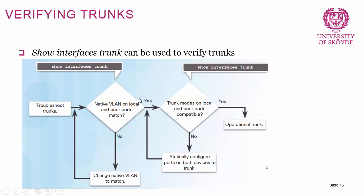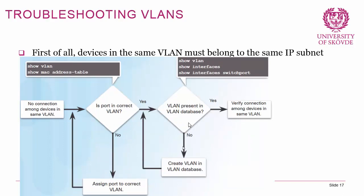For verification, 'show interfaces trunk' is probably the most important command — it shows which interfaces are configured as trunk lines. If a trunk doesn't work, first check that the same native VLAN is configured on both sides. Also make sure both sides allow the same VLANs. For VLAN connectivity troubleshooting, make sure you did the correct VLAN port assignment using 'switchport mode access' and 'switchport access vlan', and that the VLAN is actually created — use 'show vlan'. Those are your go-to commands.